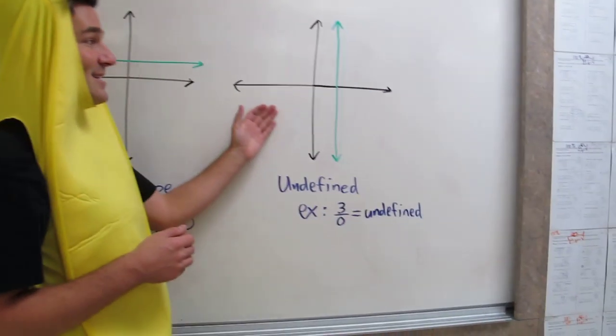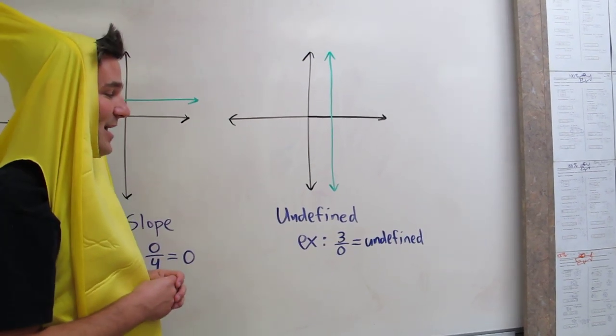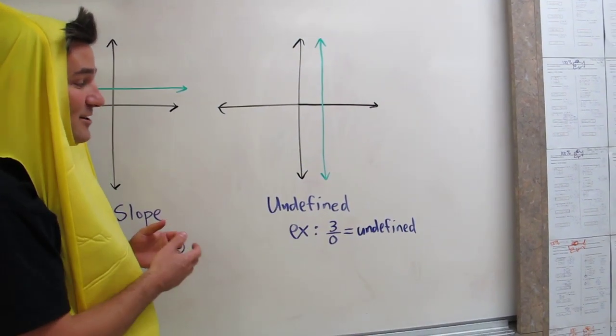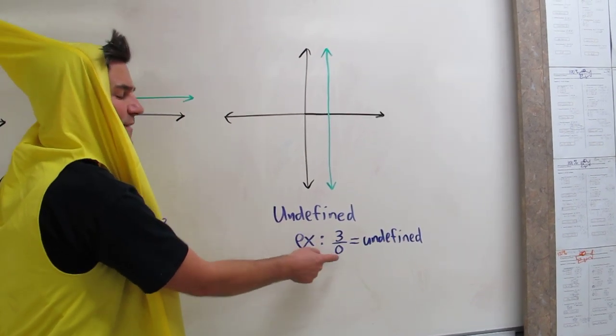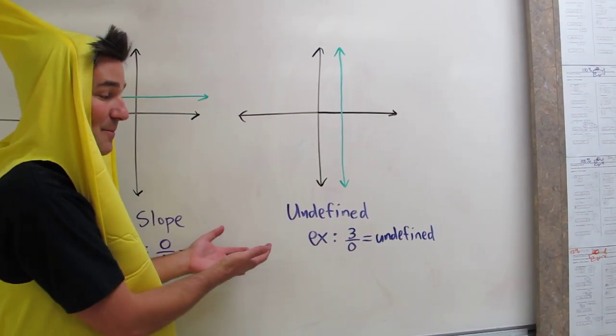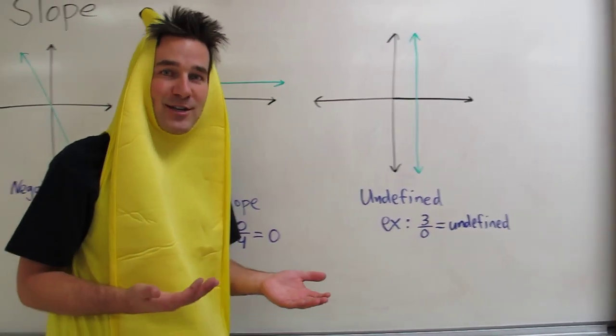The last case is if we have a vertical line like this. We call this slope undefined. We know we have an undefined slope when you're calculating slope and you have something like 3 divided by 0. That can't be done, so we call this undefined. Now let's talk about how we actually calculate slope.